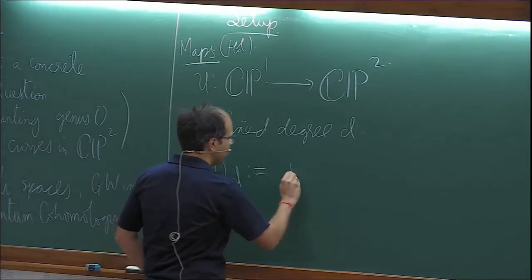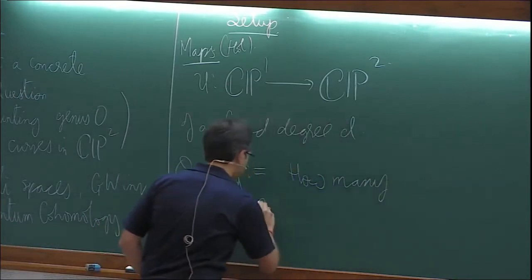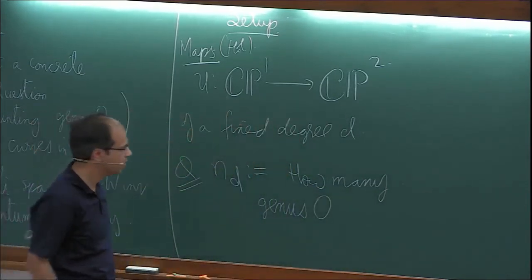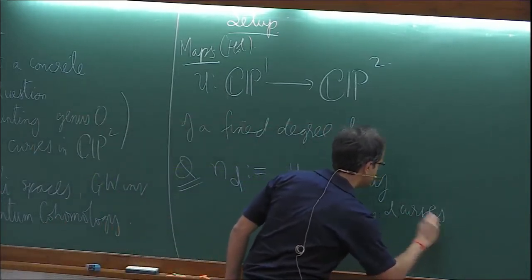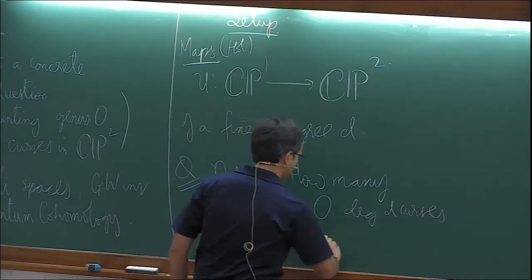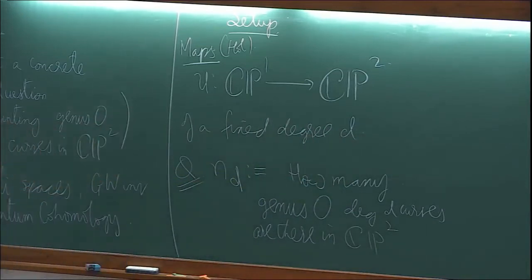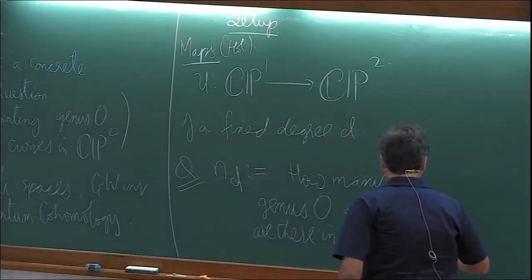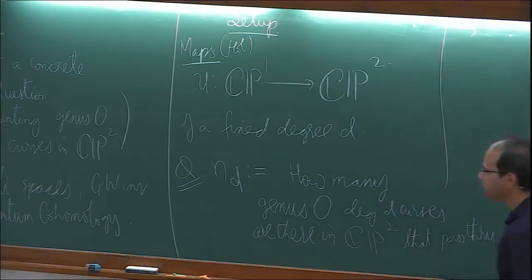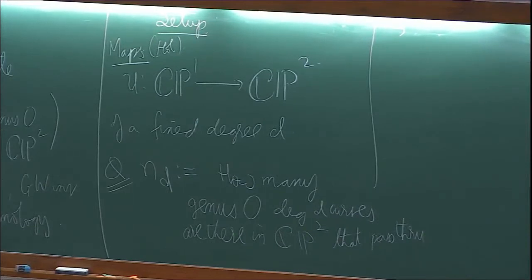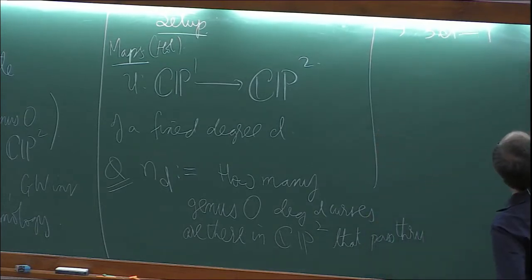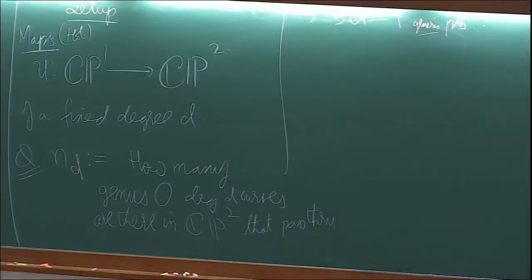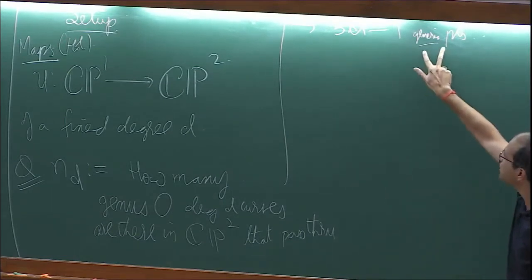The question is: how many genus 0 degree D curves are there in CP2 that pass through the correct number of generic points? That number is 3D minus 1 generic points. I'll give a heuristic justification why this is the correct number. For D equal to 1, 3D minus 1 equals 2, so N1 asks: how many lines are there through 2 generic points? At least for the case of lines, 2 is the correct thing.